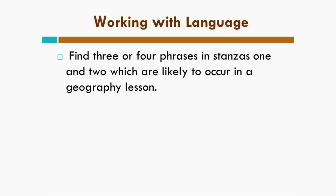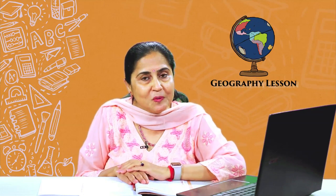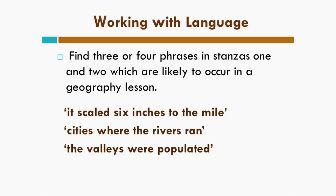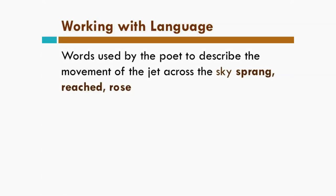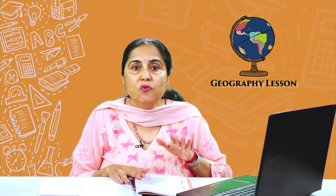Find three or four phrases in stanzas 1 and 2 which are likely to occur in a geography lesson. Open your geography books and open this poem. What are the two or three phrases or words that you find in the geography lesson also? It scaled six inches to the mile; cities where the rivers ran; the valleys were populated. So these things we read in geography also. Working with language — words used by the poet to describe the movement of the jet across the sky: sprang, reached, rose. The poet has used these words to show the movement of the aircraft — it sprang, it moved up, it went up.